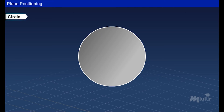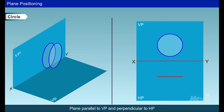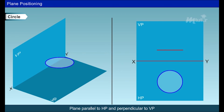A circle has no corners and edges. If the circle is parallel to VP and perpendicular to HP, it can be drawn as shown. When the circle is parallel to HP or its circumference rests on the HP, it can be drawn as shown.